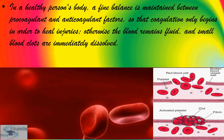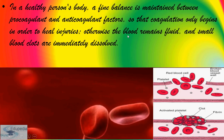Finally, platelets and the endothelium release growth factors which control the wound healing process. At the end of this process, the fibrin network is dissolved by enzymes in the blood plasma. In a healthy person's body, a fine balance should be maintained between pro-coagulant and anti-coagulant factors so that coagulation only begins in order to heal injuries; otherwise, the blood will remain liquid and small blood clots are immediately dissolved.